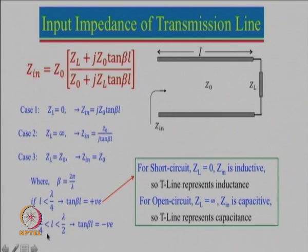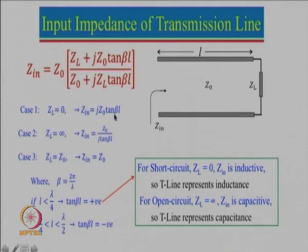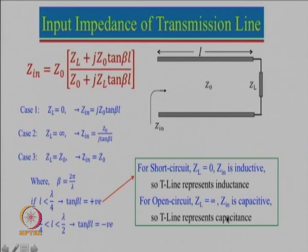What happens if the length becomes more than λ/4? In that case, if the half-length is between λ/4 and λ/2, then tan(βL) — which is 2π/λ × L — will be negative. So in this particular situation the open-circuit impedance will become inductive. Please remember: for a small dipole antenna Z_in will be capacitive along with the radiation resistance; for a larger dipole antenna this term becomes negative and it may become inductive.